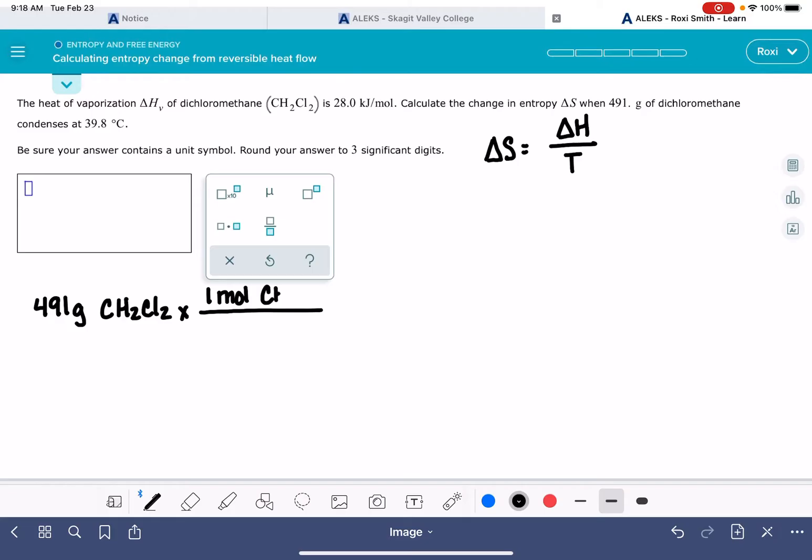One mole of CH2Cl2 is 12 plus 2 plus 35 and a half plus 35 and a half. You should be using exact molecular weights, not rounding, like I'm doing 85 grams per mole for CH2Cl2. So we have, in this 491 gram sample, we have 5.776 moles.